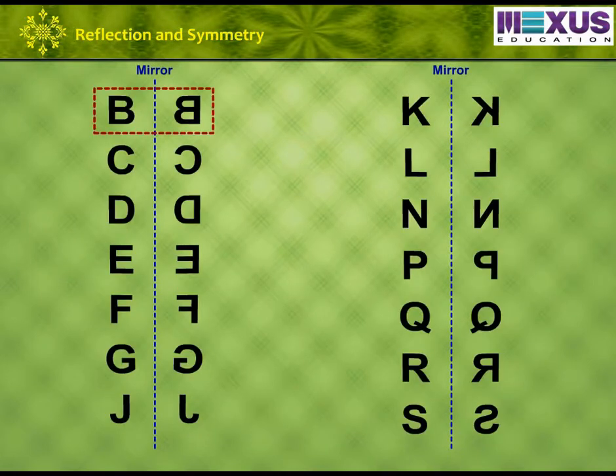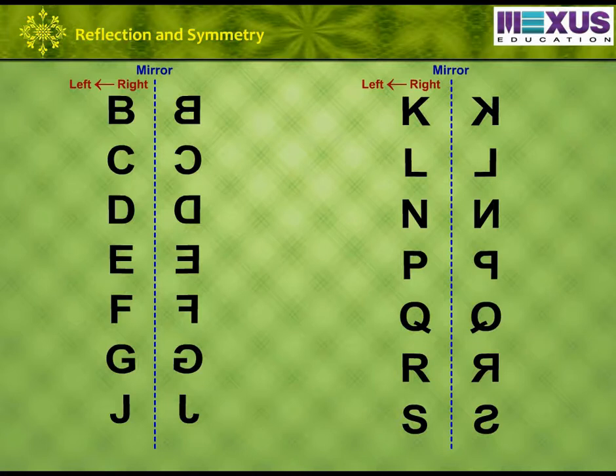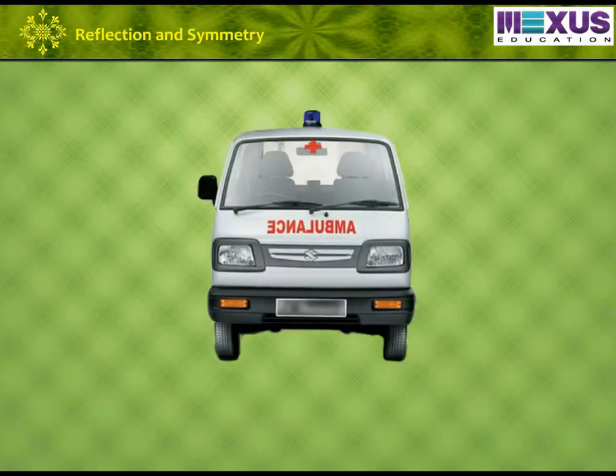Whereas, letter B, C, D, E, F, G, J, K, L, N, P, Q, R, S of the alphabet appear reversed in their mirror image because the letters written from right to left appears as written from left to right in their mirror image. This concept is used in writing word ambulance in reverse manner on the ambulance vehicle so that the other vehicles while driving can read it correctly in their rear mirror.